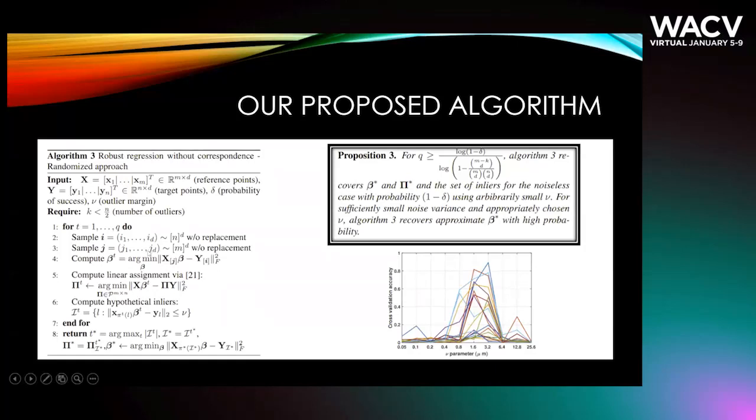We can simply extend this algorithm to high dimensions by just considering D samples instead of one sample because we want to solve for a regression problem that is a D by D matrix. For this extension, we again provide bounds on the number of iterations that we need to run this algorithm to achieve an approximate solution. Although in the worst case it could be exponential, but in our experience we don't need to run it for too many trials to get a good approximation.